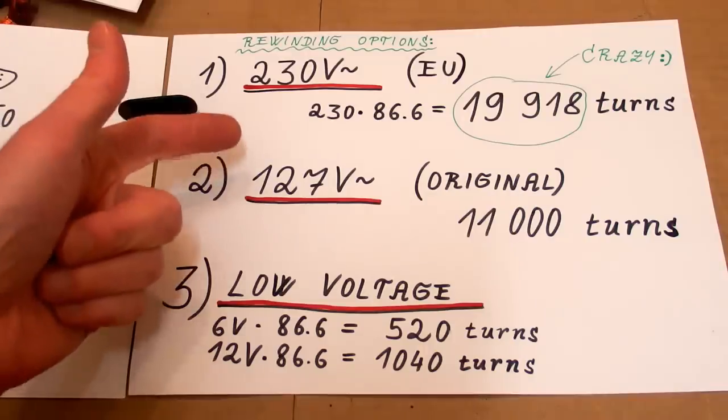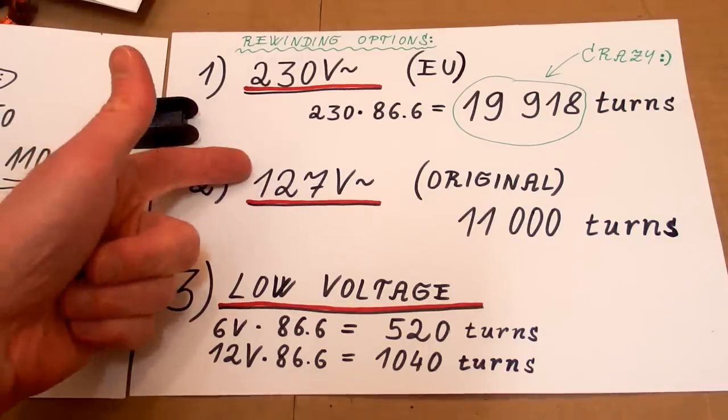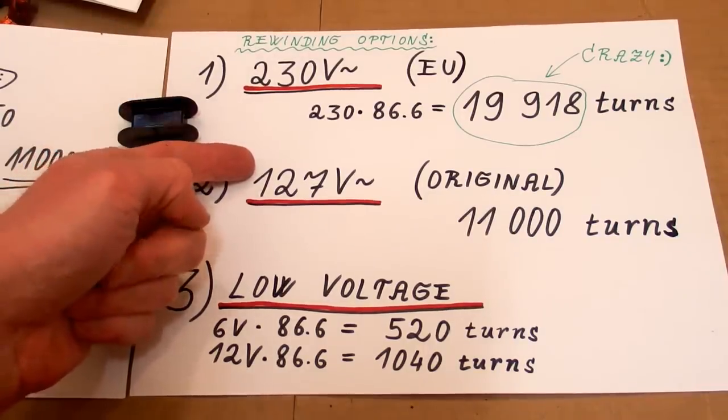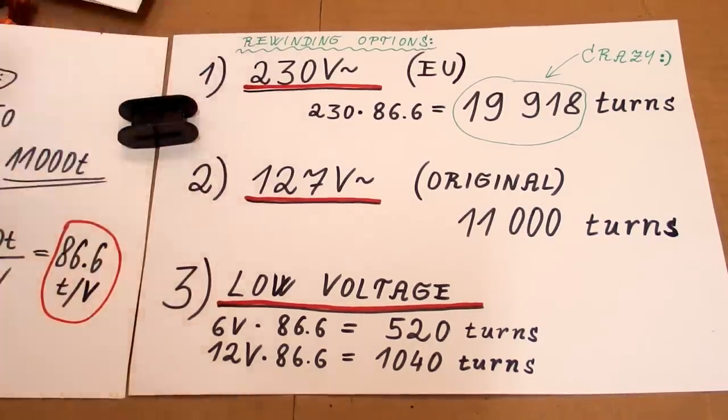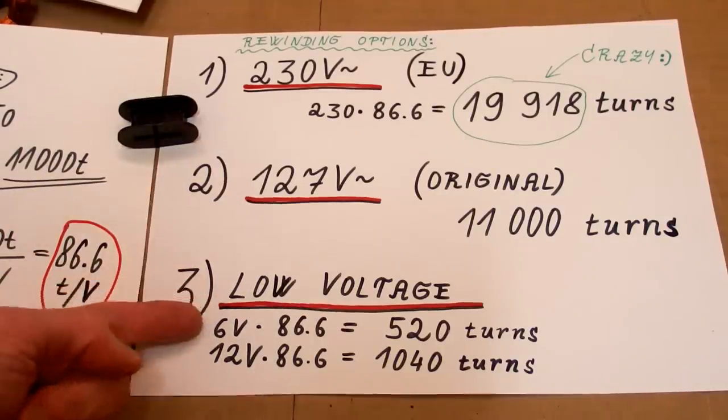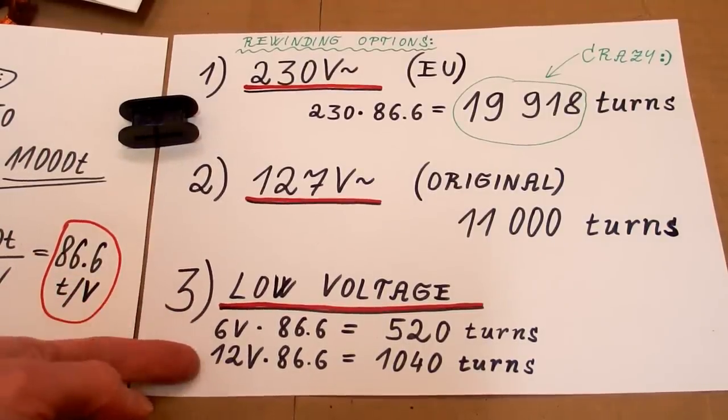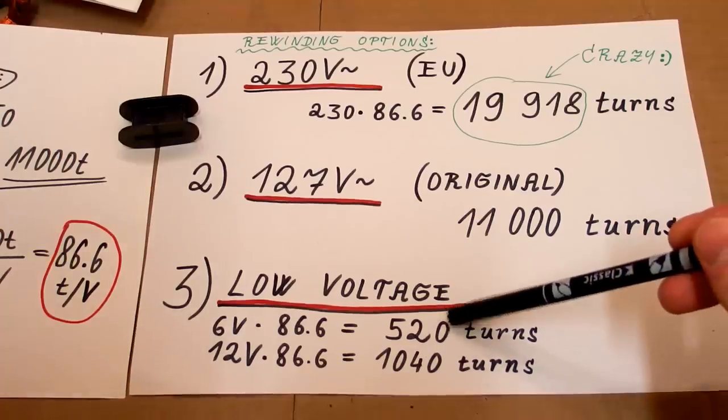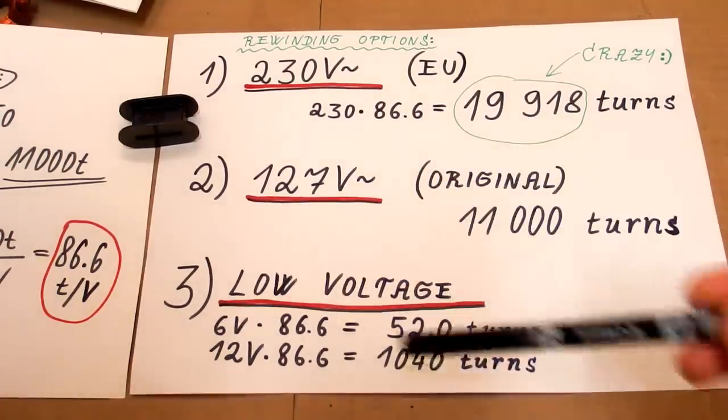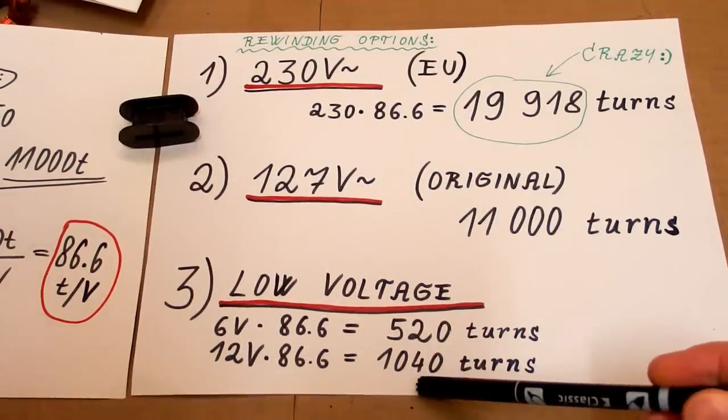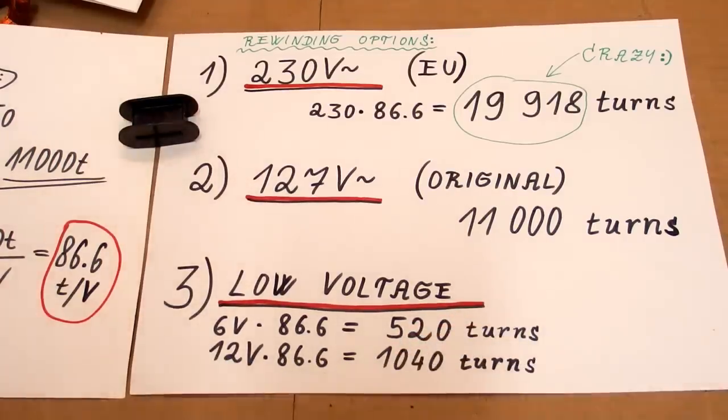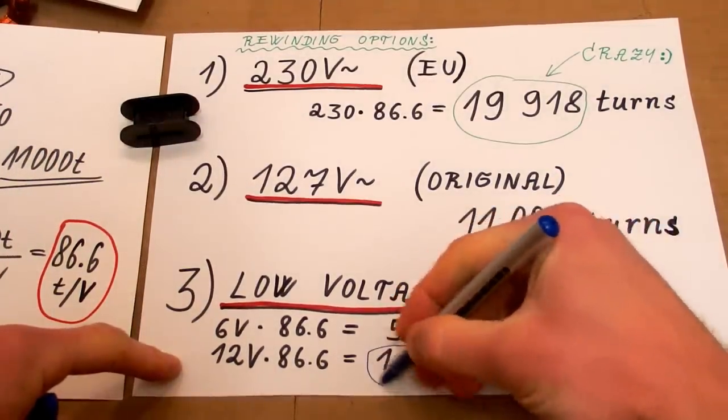I could also rewind it to the original voltage but this is a completely useless voltage for me because the mains is different here. And the last option is to rewind it for some standard low voltage like 6 or 12 volts. It would be 520 turns for 6 volts or 1040 turns per 12 volts. I will probably do it for 12 volts.